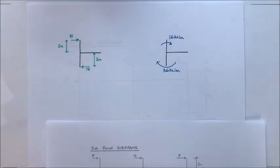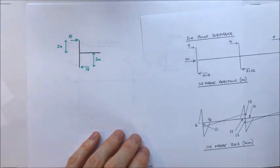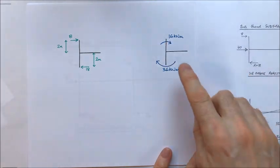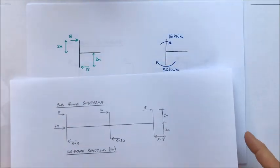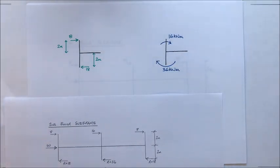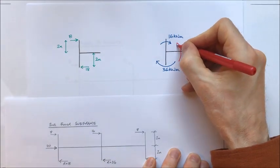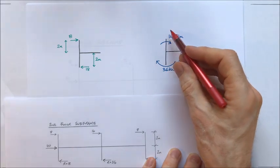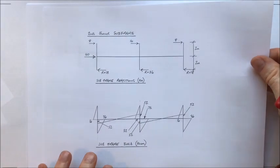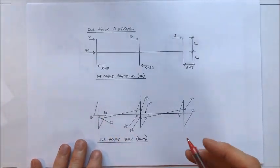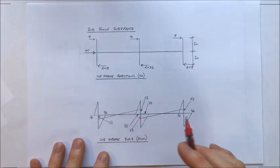Thinking about the left hand column where I have 16 kilonewton metre moment in the upper column and 36 in the lower column, the bending moment in the beam has to be these two added together: 16 plus 36 equals 52 kilonewton metres. That's how I've calculated the bending moment in the beam at this point. A similar exercise at the right hand side also comes out to 52, and a similar exercise at the centre as well.